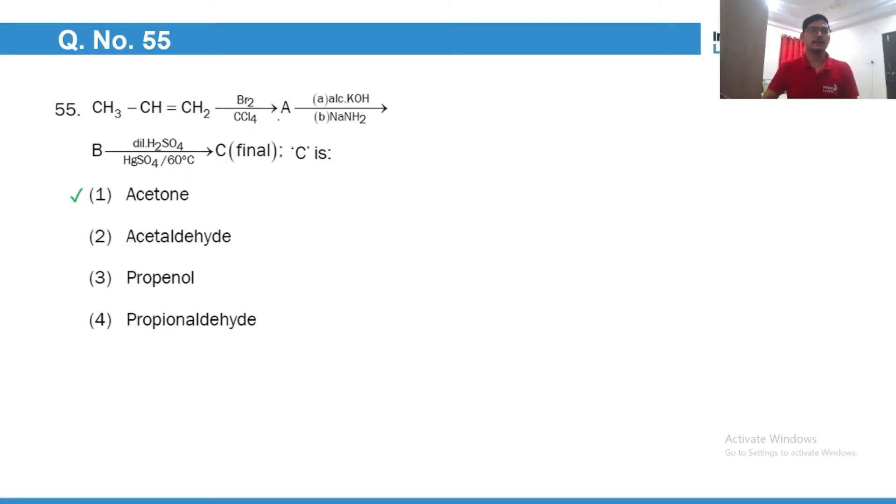First, Br2 will attach across the double bond. Product would be this, and then alcoholic KOH and sodamide. Two rounds of beta elimination will give propyne, and then dilute H2SO4 in presence of HgSO4 will add one equivalent of water as per Markovnikov manner. And you can see this is enol form, it will tautomerize to the more stable keto form. So the final product would be acetone.